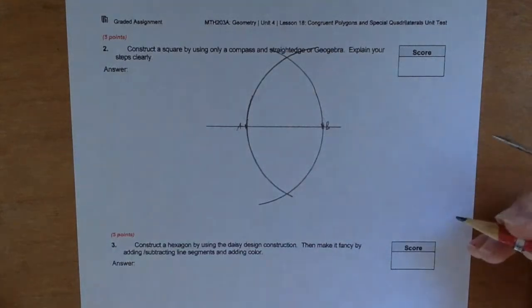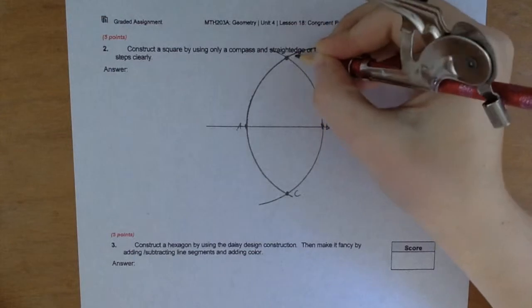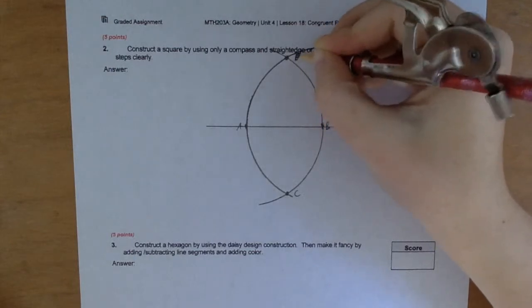Now what you gotta do is, well, we could label these. Let's see, this is C and D.